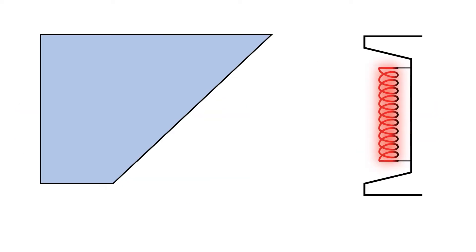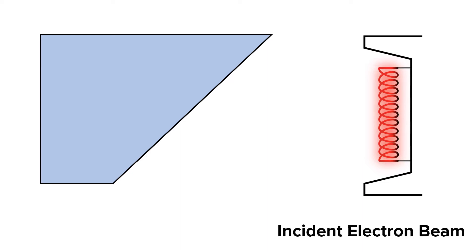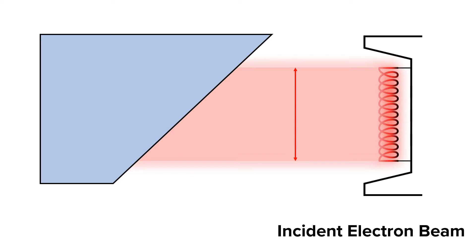Here we have a section of the anode on the left and the cathode on the right. There are three important terms that you need to know. The first is the incident electron beam. The incident electron beam are those electrons leaving the cathode and traveling to the anode. The width of the incident electron beam is determined by the width of the filament on the cathode.